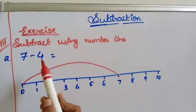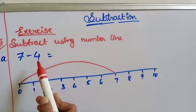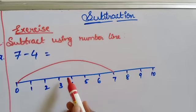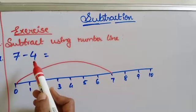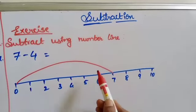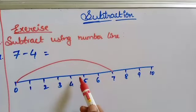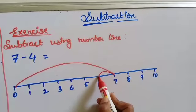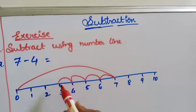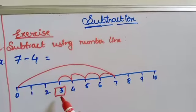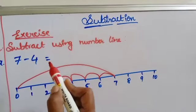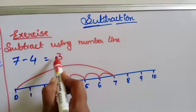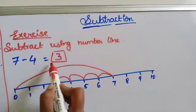After that, the next number is 4. From 7 we have to count back — that is, we count backward by 4 steps: 1, 2, 3, 4. So what answer did we get? 3. So 7 minus 4 is equal to 3.